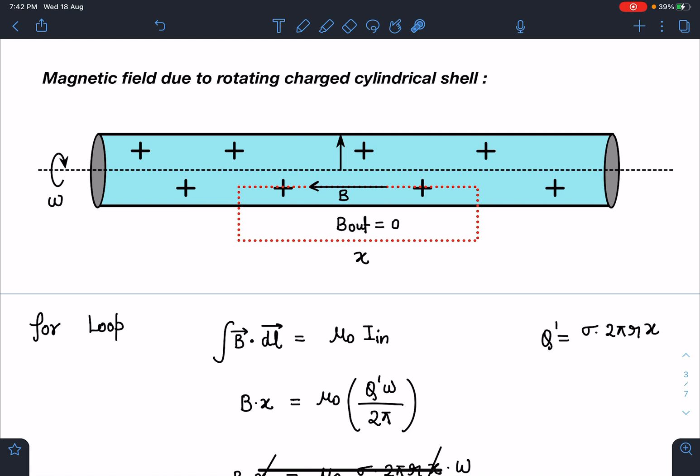For magnetic field due to rotating charged cylindrical shell, we can use Ampere's law. I'm taking this Ampere loop. Since it's a long solenoid, the field is nearly uniform everywhere inside. If this field is uniform, outside is nearly zero.